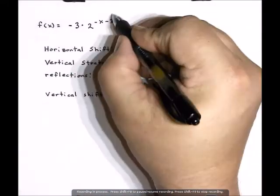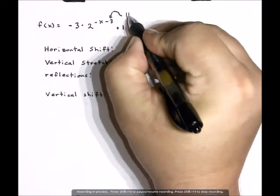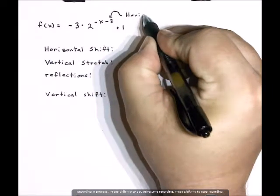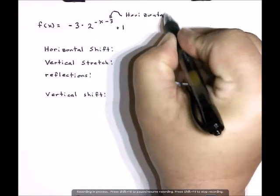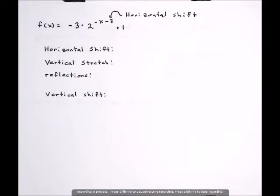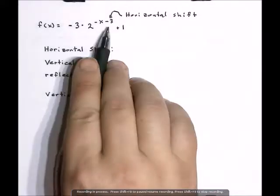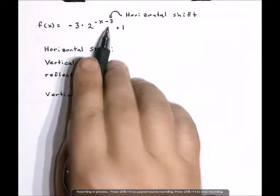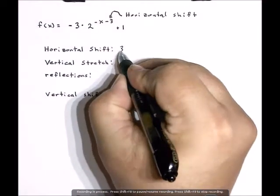The horizontal shift comes from here. So that's a horizontal shift, 3 to the right. And just like the other ones, it goes in the opposite direction you would think. So we have a horizontal shift, 3 to the right.